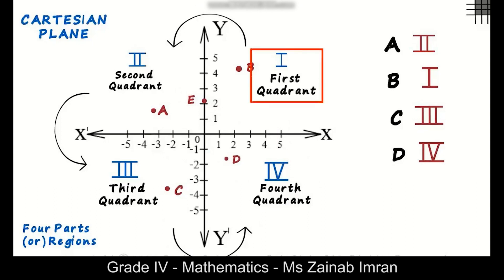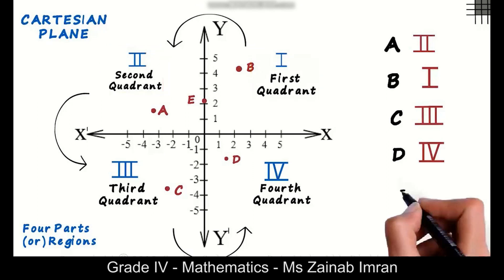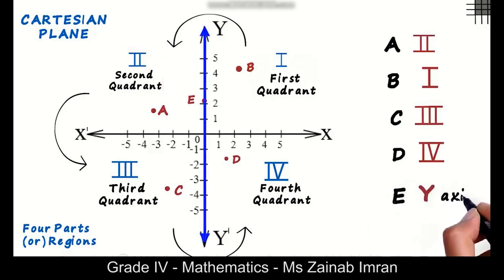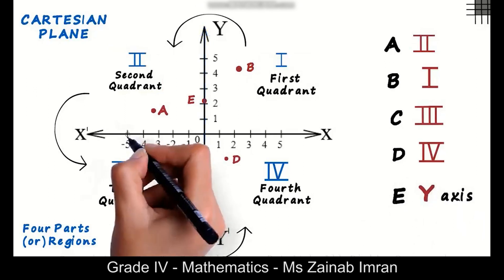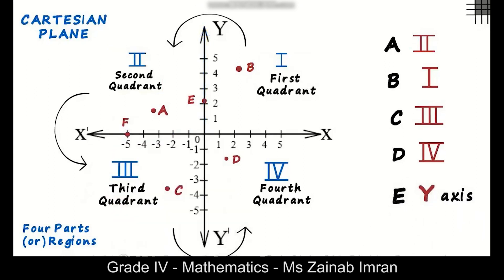Now let's look at something interesting. What about this point E? Which quadrant does it lie in—first quadrant or the second one? We say that point E lies on the y-axis. What about point F here? Yes, point F lies on the x-axis.